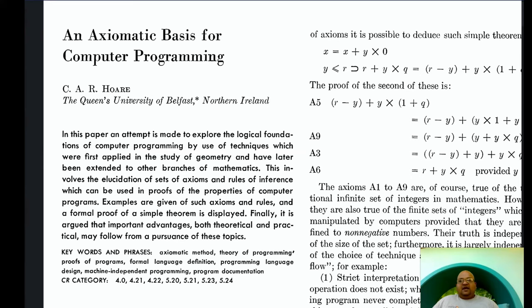All right, folks, so today we're going to look at a paper by Sir Tony Hoare, who was awarded the Turing Award back in 1980 for his fundamental contributions to the design and implementation of programming languages. This paper came out in 1969 and was one of the earliest papers which tried to formalize mathematically what programs mean and how to prove them correct.